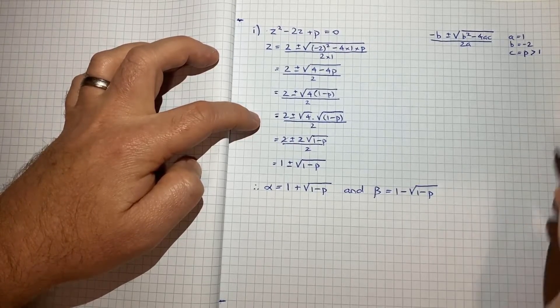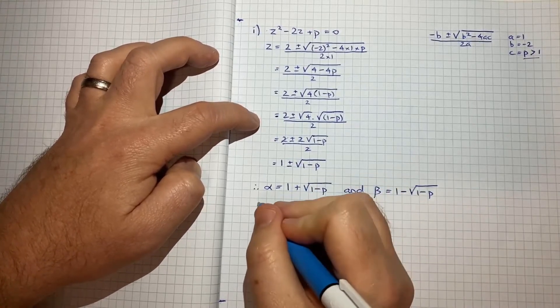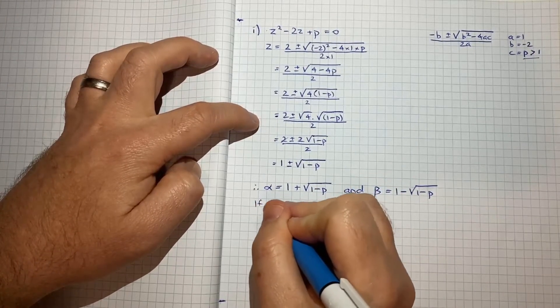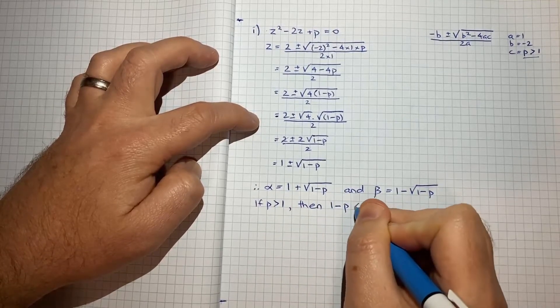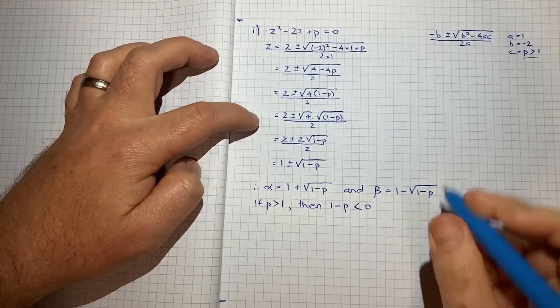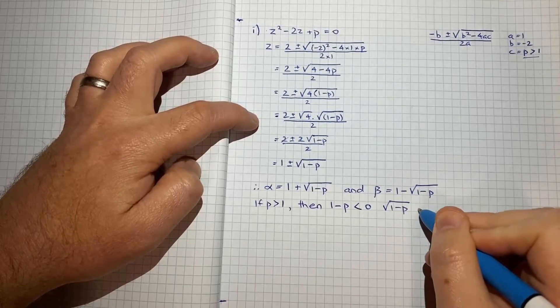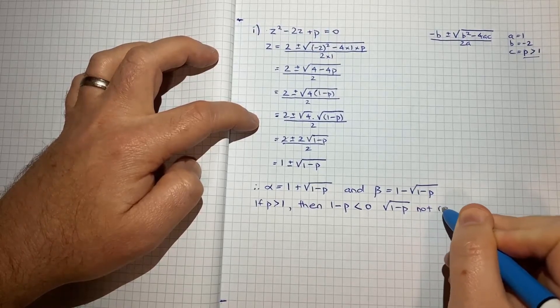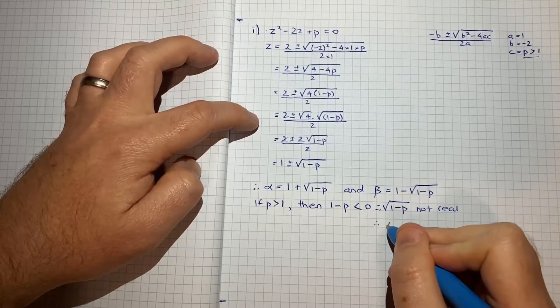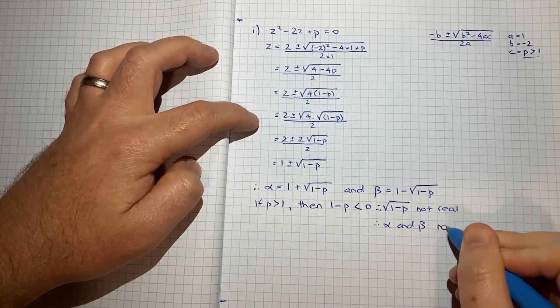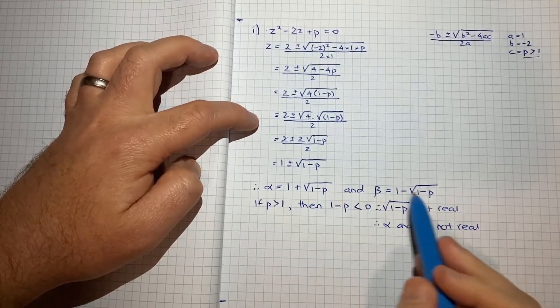Now, the key is to remember that p is greater than 1, that's what we've been told. So we can say that if p is greater than 1, then 1 minus p must be less than 0. And that means the square root of 1 minus p is not real. Now, if that's true, that means alpha and beta are not real, because alpha and beta both have the square root of 1 minus p in them.